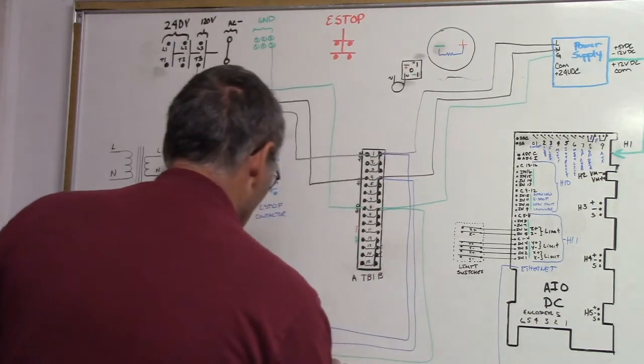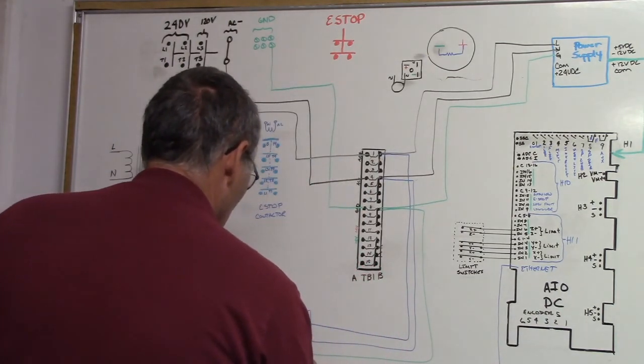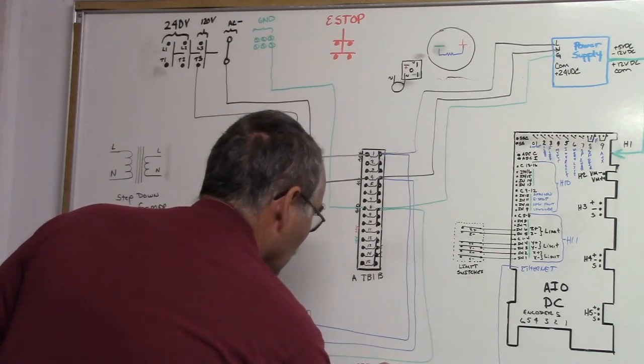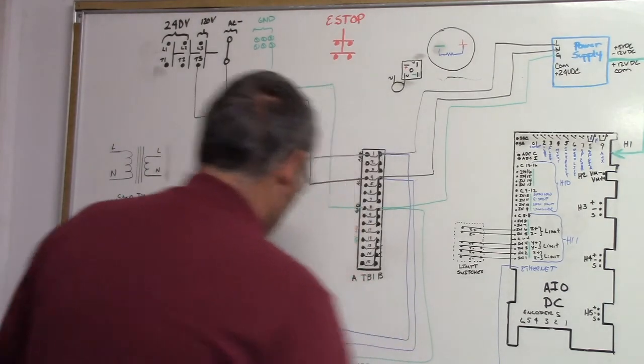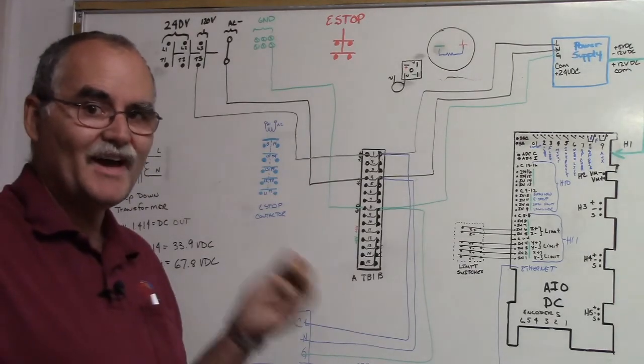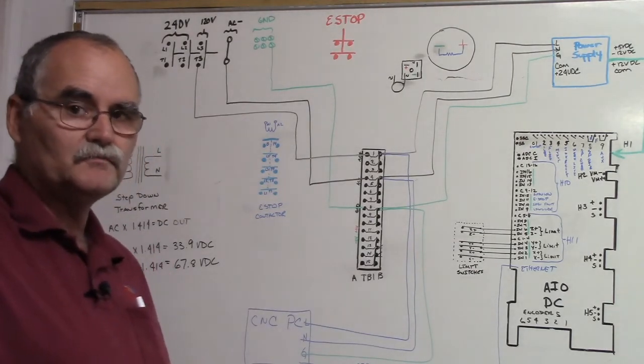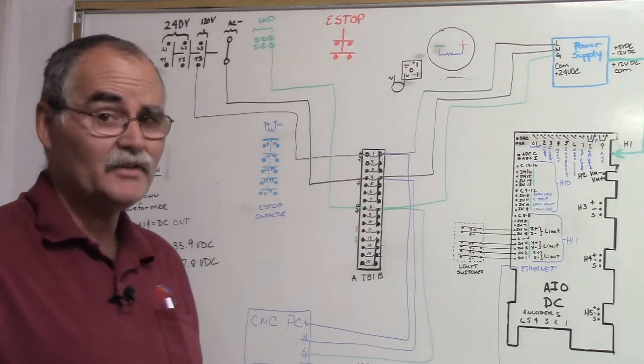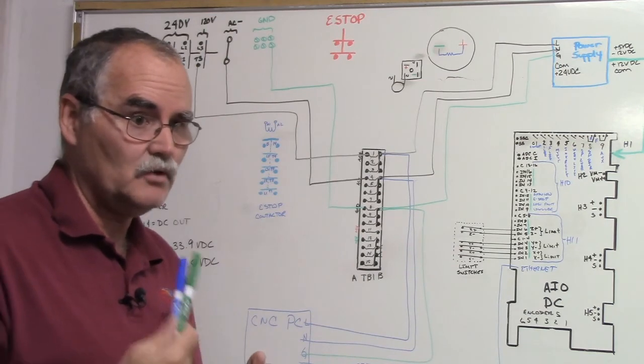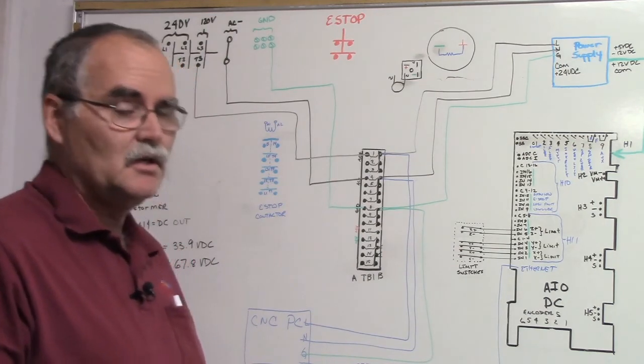Ethernet port of the CNC PC. Now it's important to note that that is a shielded ethernet cable. I believe it comes with the all-in-1 DC kit, which comes with power supply, the cable, and the all-in-1 DC.